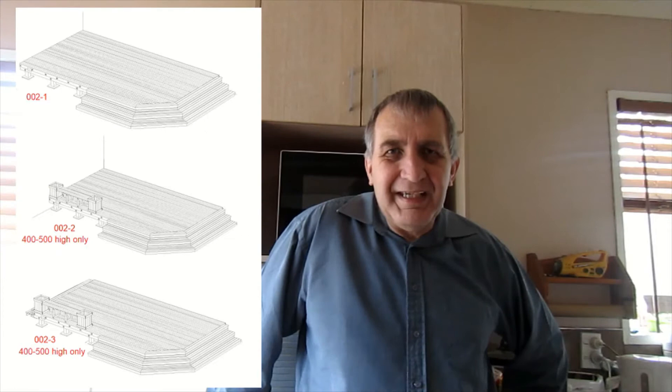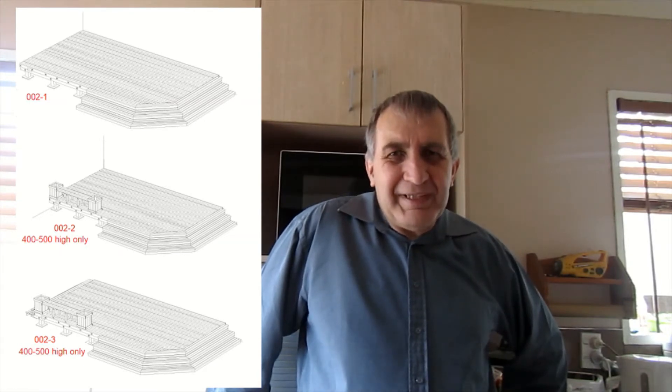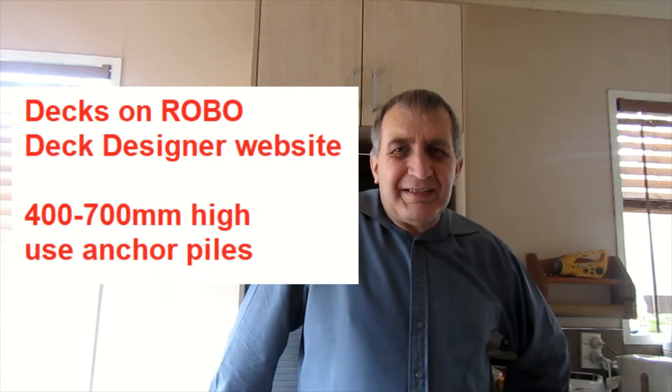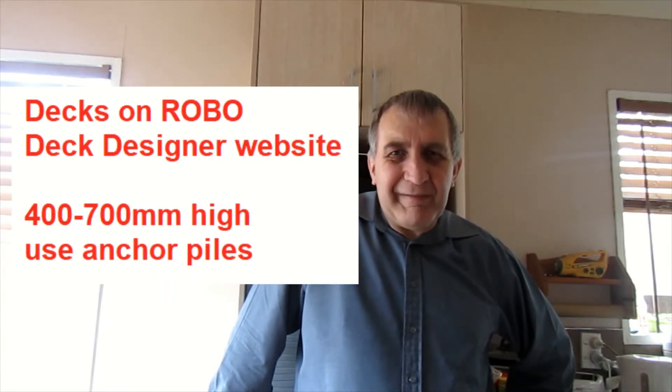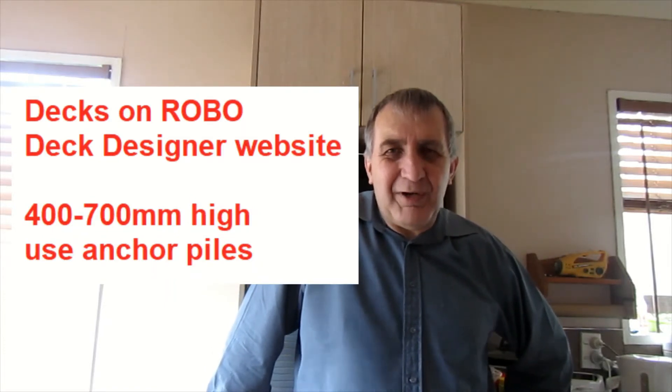With the two different types of poles, anchor poles are really suited to lower decks. On the Robodeck Designer website with the online tool, all the decks designed between 400 and 700 millimeters high use anchor poles and those greater than this height use brace poles.